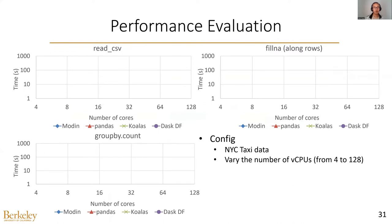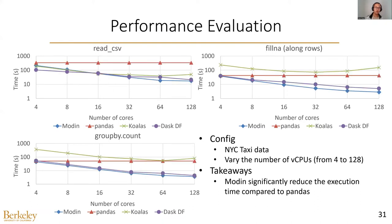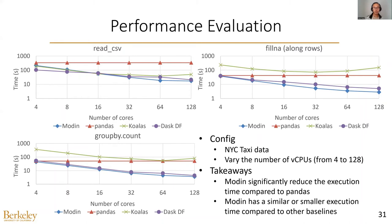We also compare Modem with other data frame systems, DaskDF and Coalus. DaskDF runs on Dask and Coalus runs on Spark. We test three Pandas functions: Read CSV, which loads a CSV file into a data frame; FillNA, which fills log values along rows using a UDF; and groupby count, which groups the data frame and computes the count for each group. We find that with the number of cores increasing, the execution time of Modem significantly reduces. Modem has smaller or similar execution time compared to other baselines — for example, Modem can reduce execution time of DaskDF by up to 44%, due to our efficient metadata management.